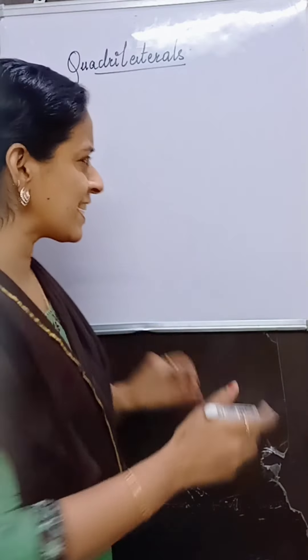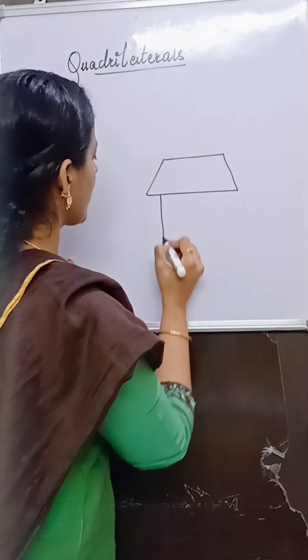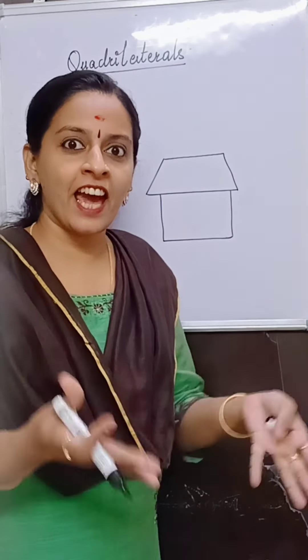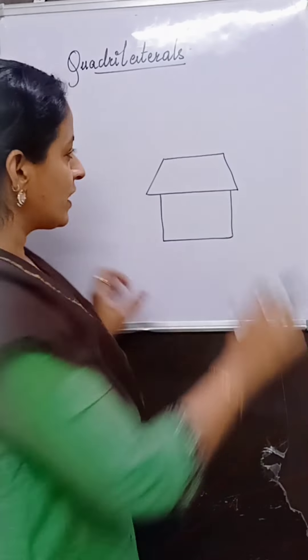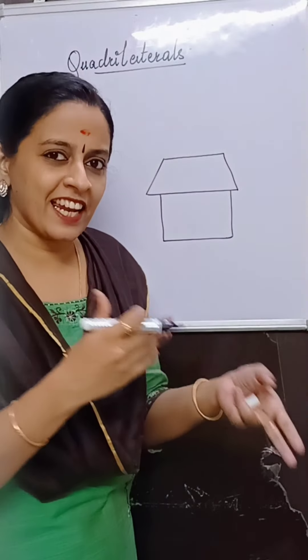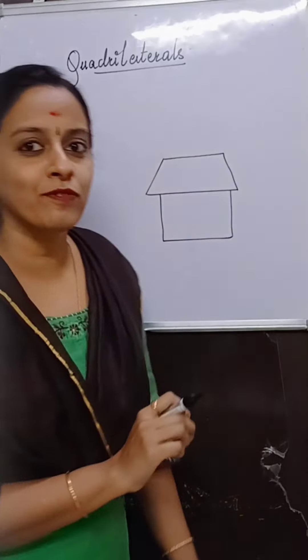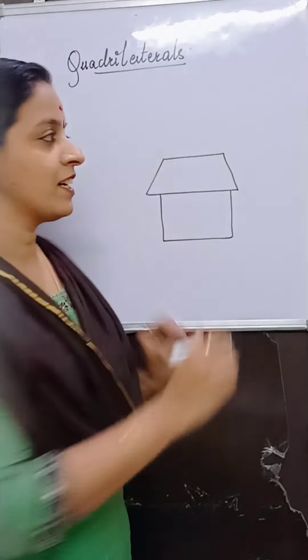It's not new — right from our childhood days we are drawing trapezium. When I was in my primary class, I used to draw a house this way. Unknowingly, I was in touch with this quadrilateral called trapezium. The upper part — the roof of the house — is nothing but a trapezium.